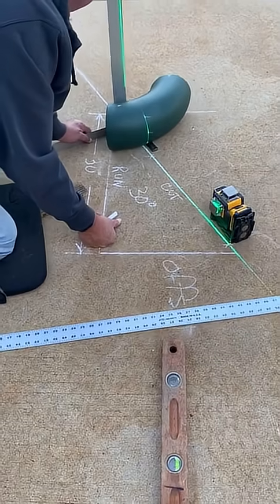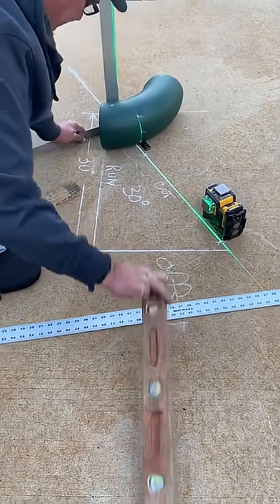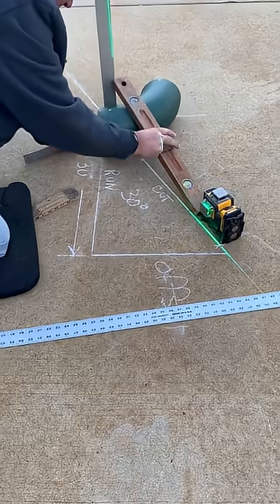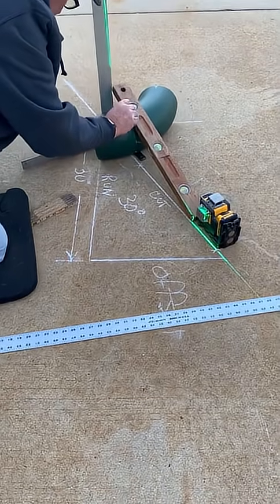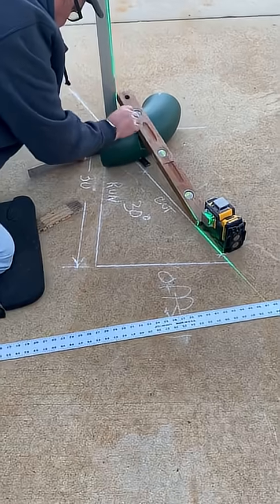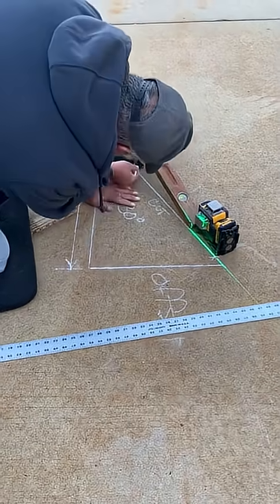take your square on the back side, project that up. Take your level, put it on the line until it hits the square. And now you have a point on top. So we have the back laid out.